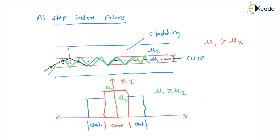To summarize step index fiber: first, the core has a small diameter. Second, it offers a low numerical aperture. Third, the signal loss is more — that is higher attenuation. Fourth, we can use a wide range of bandwidth for signal transmission.